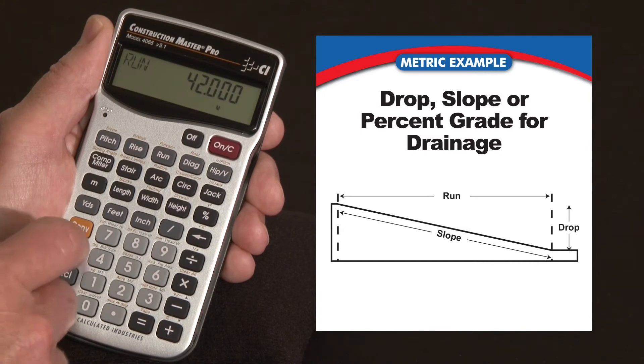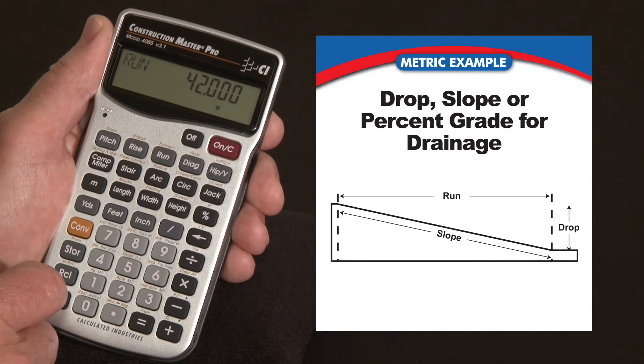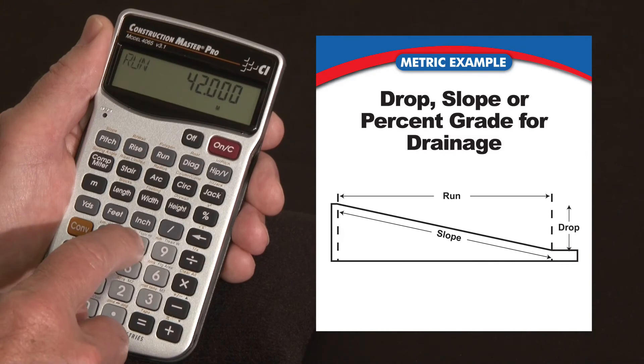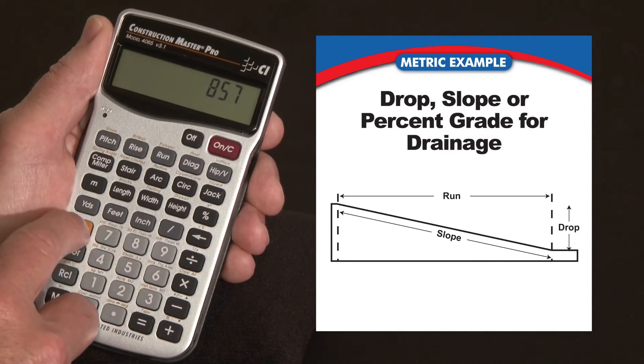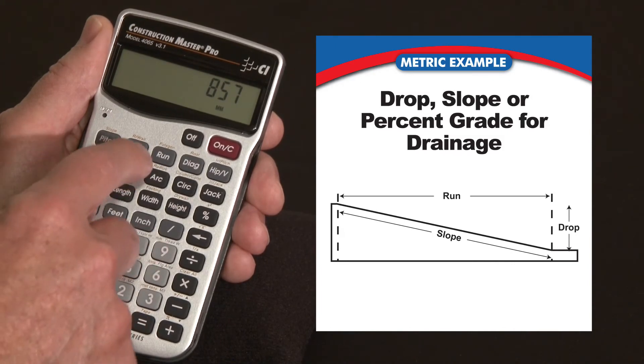And you've taken a shot with your level and you see that it's about 857 millimeters lower at the far end, it drops. So let's say 857, and I hit convert 9 for millimeters, and I'm going to enter that as the rise or the amount of vertical change.